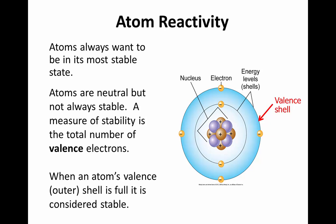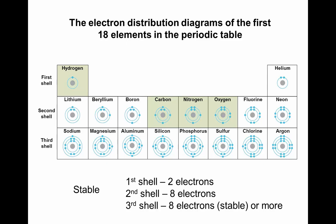A measure of stability is the total number of valence electrons. When an atom's valence electrons — its outer shell — is full, it is considered stable; if not, it is considered unstable. Take a look at this diagram of the distribution of electrons of some various chemical elements.